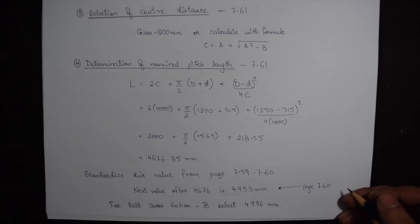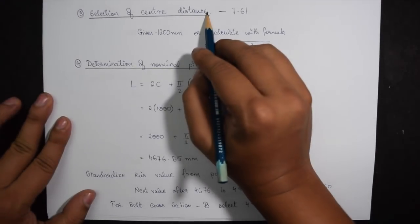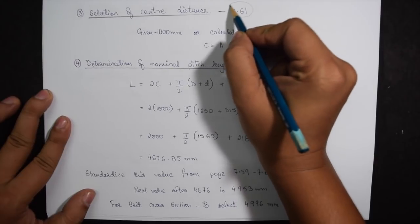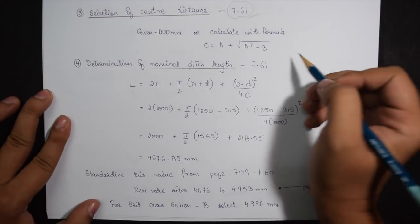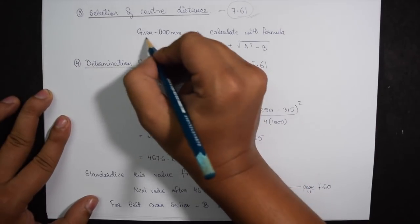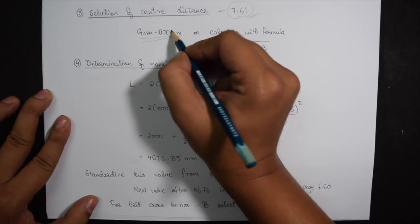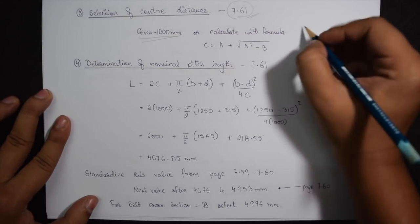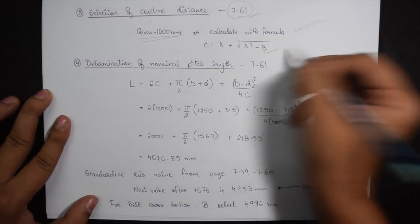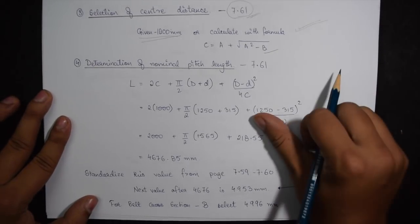Now we will jump on to the third step which is the selection of center distance given on page 7.61. While looking at the question we also see that the given center distance is 1000 mm. So we do not need to find the center distance once again by using this formula. It is already given to us as 1000 mm.